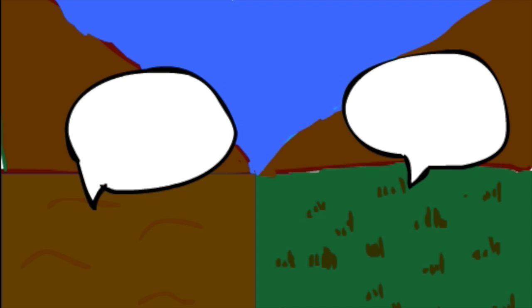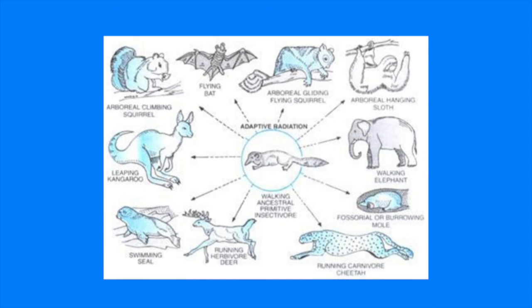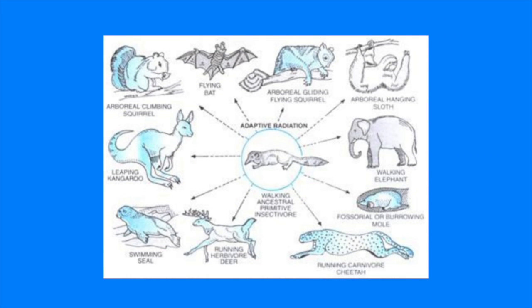This will eventually cause the bug species to split into several groups that are each adapted to a specific habitat. These groups will then evolve to become a separate species of stick bug. Over a long period of time, this will happen until the population will fill many parts of the environment, which is known as adaptive radiation.